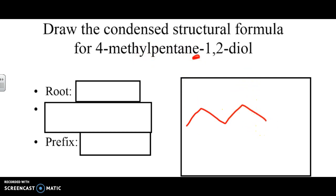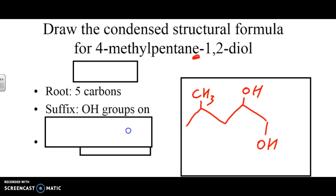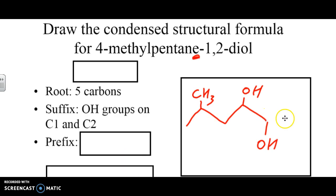We've got an alcohol group at spot one. We've got an alcohol group at spot two. We can see at spot four is where we're going to have our methyl group. So, for the root, it's a five-carbon chain, which is why it's pentane. We've got OH groups on carbon one and carbon two, and the prefix is going to have a methyl at spot four. So, therefore, this is going to be our answer here.